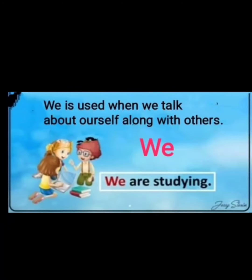Now, use of 'we'. 'We' is used when we talk about ourselves along with others. Here is a boy and two girls — all three children are sitting together and they are studying. So what does the boy say? That we are studying. So 'we' is a replacing word used when we talk about ourselves along with others.